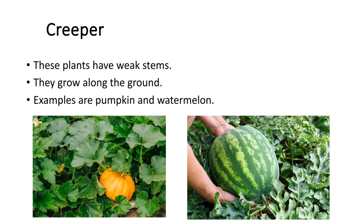Creepers: these plants have a weak stem. They grow along the ground. Examples are pumpkin and watermelon.